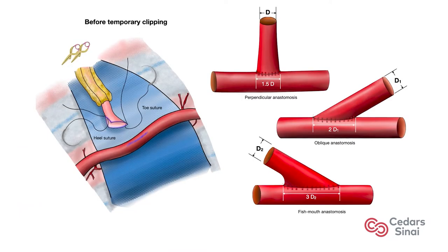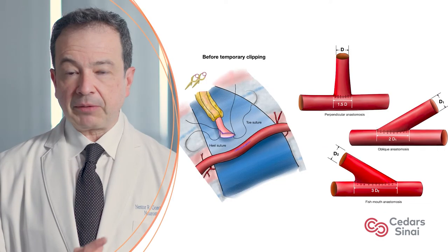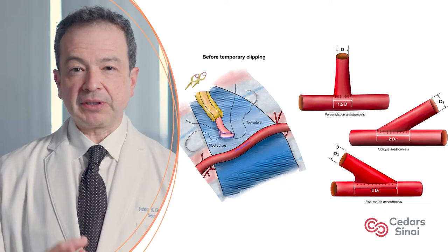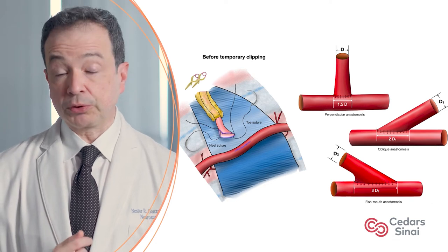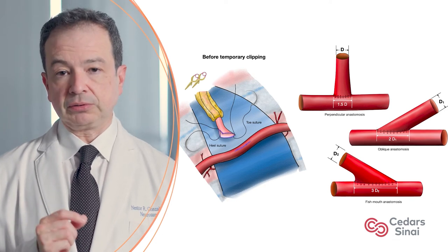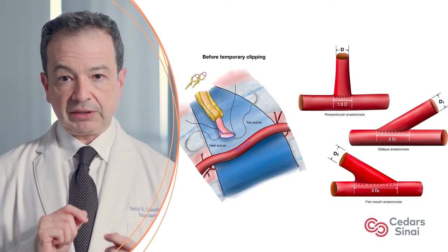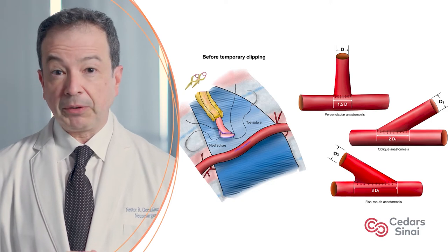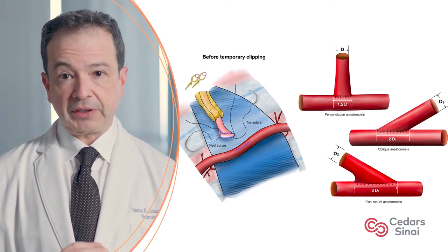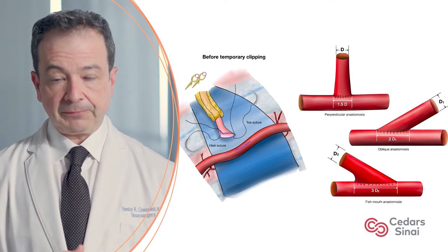The following are the essential pearls in the surgical performance of a direct bypass. It is very important to prepare the smallest temporary clips that would completely occlude the recipient vessel but prevent twisting of the artery and becoming obstacles in the working field.